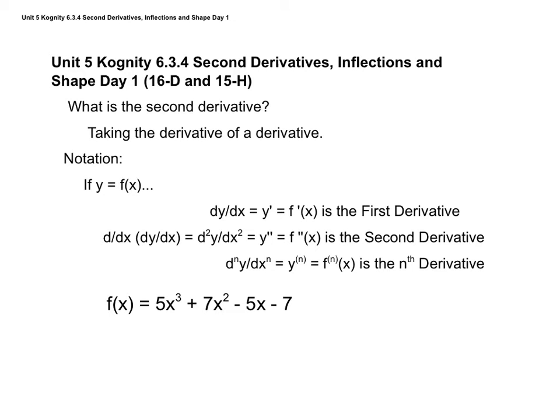The notation I'll remind you of here — we have a couple of different ways, just like with the original derivatives. We could use dy/dx, y prime, or f prime of x. For the second derivative, we're taking the derivative of dy/dx, so we could have the notation d-squared-y over dx-squared, or y double prime, or f double prime of x — and that represents our second derivative.